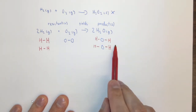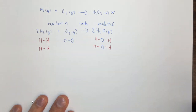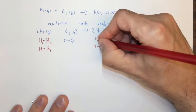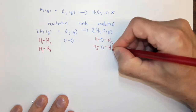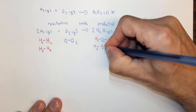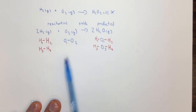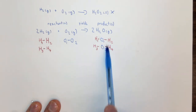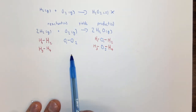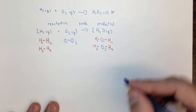Two waters means two H₂O's. Two H₂'s means two of these, and one O₂ if there's no number in front. We now have a balanced chemical equation: four hydrogens on each side, two oxygens on each side. You're going to see it written as 2H₂ + O₂ → 2H₂O. These are the reactants, yields, products. Let's look at another example: H₂ gas plus N₂ gas yields NH₃ gas.